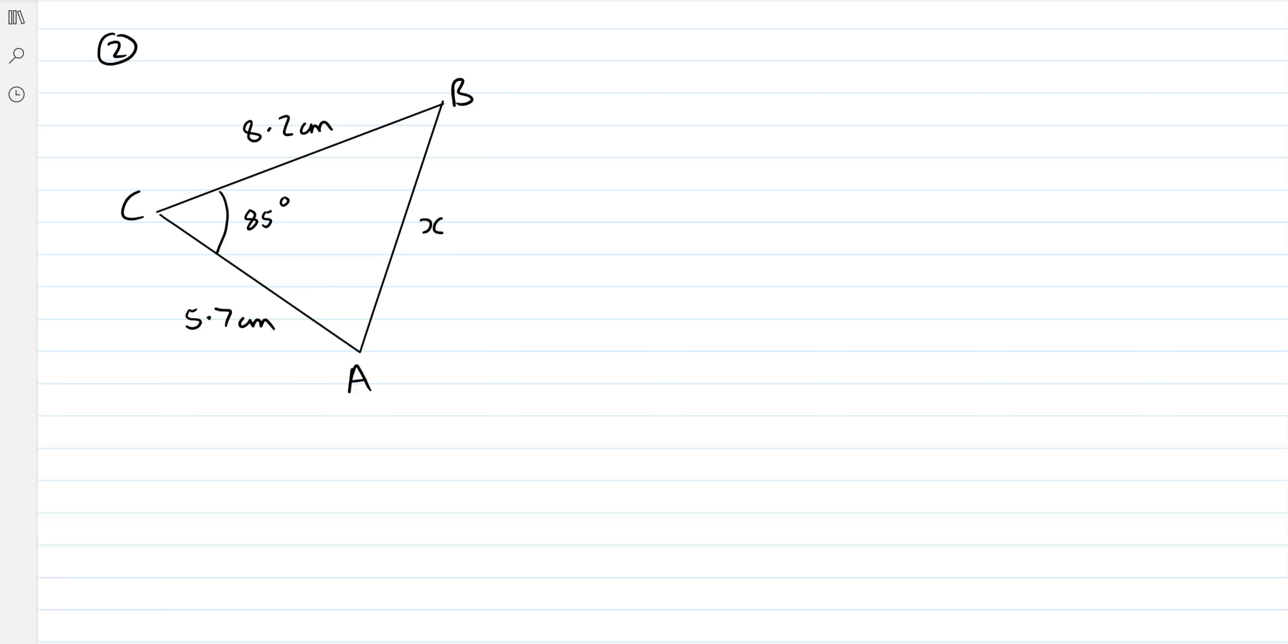So again, we've got no instance where we've got an angle and its corresponding side, just the side not the angle. Same here, just the side not the angle. And here I've got the angle but the side is unknown. And again, if you've got two sides and an angle sandwiched between them, then cosine rule is a good option.